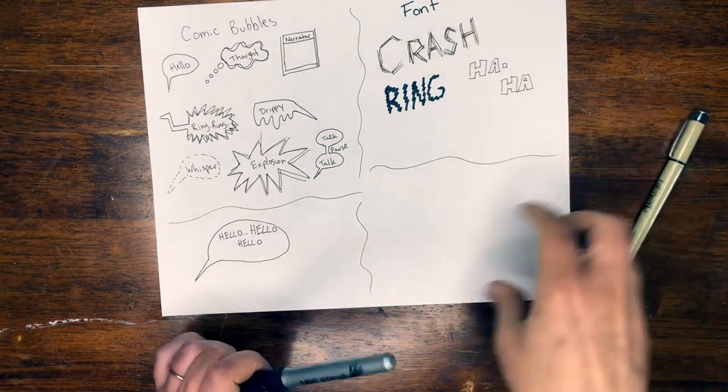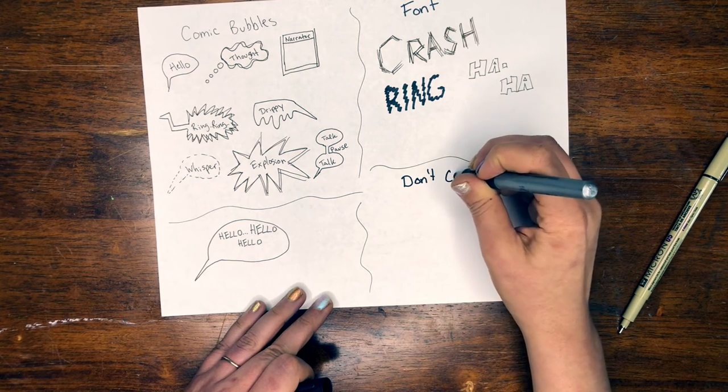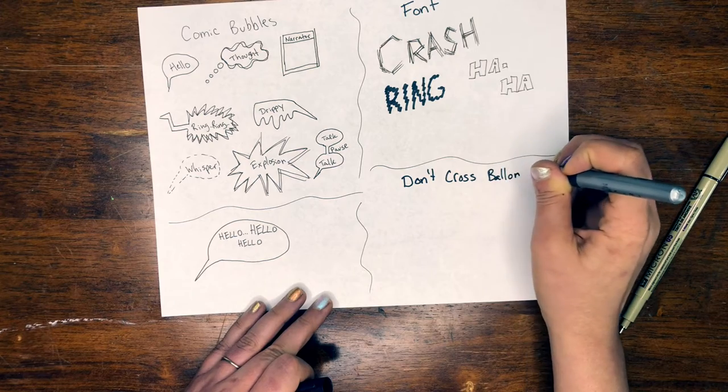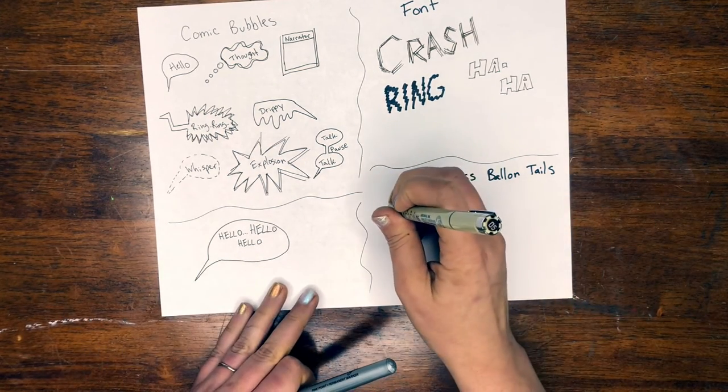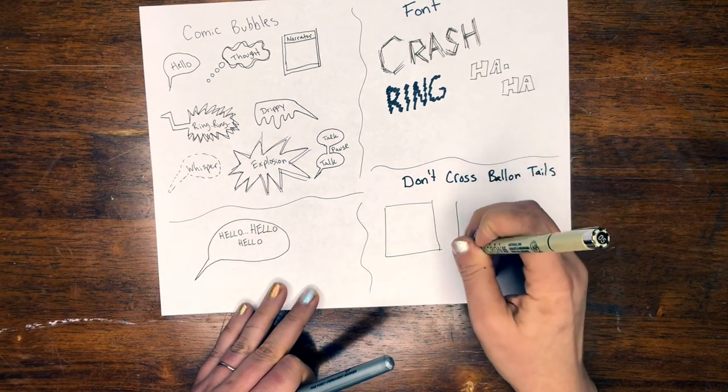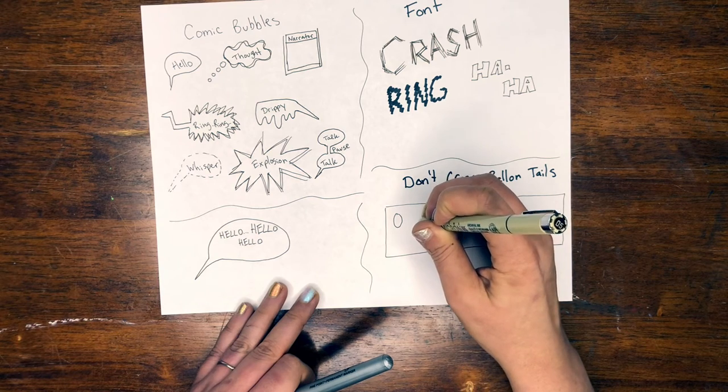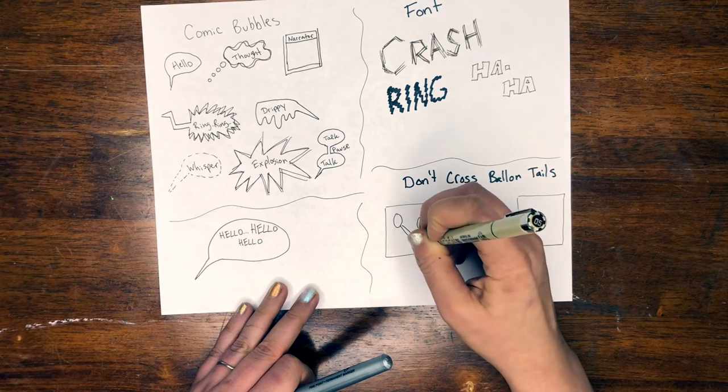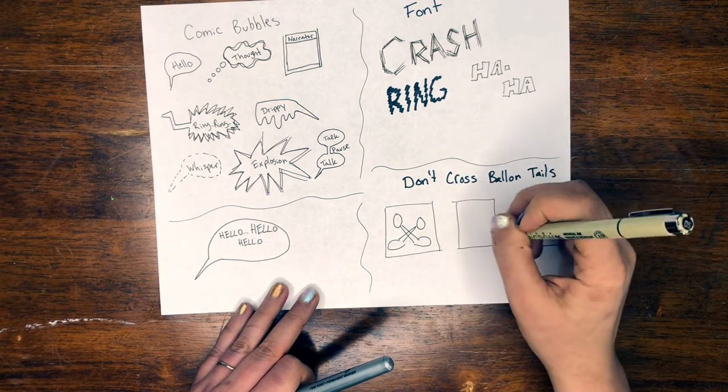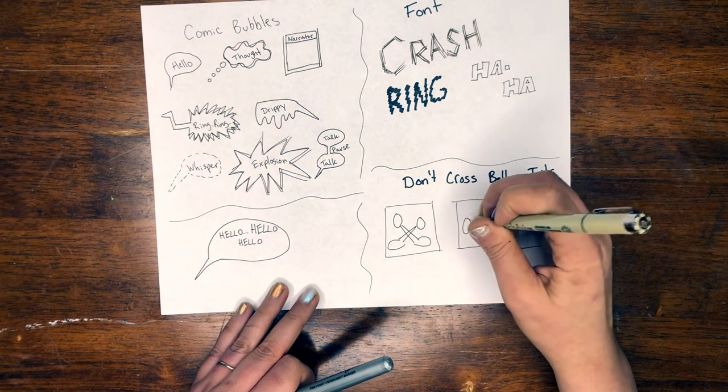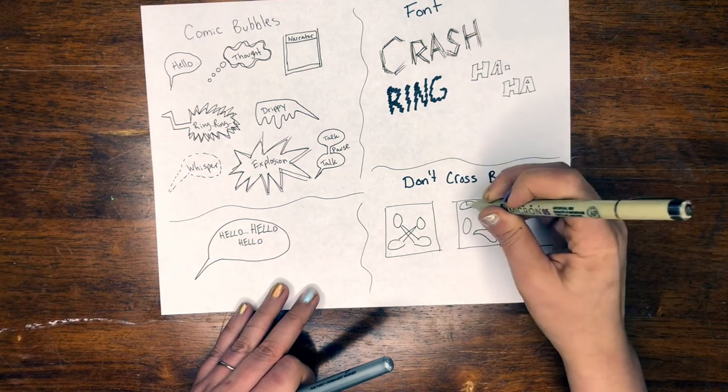And remember, do not cross your balloon tails. So if you're going to have more than one person talking in a panel, don't cross their lines. So if we have somebody here, another box here, and we have a person, and another person talking, we don't want their bubbles to go over each other. That will not be easy to read. Remember, you want to read from here to there, here to there. This is how somebody would read.